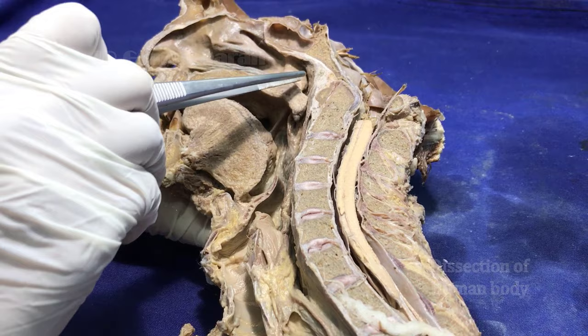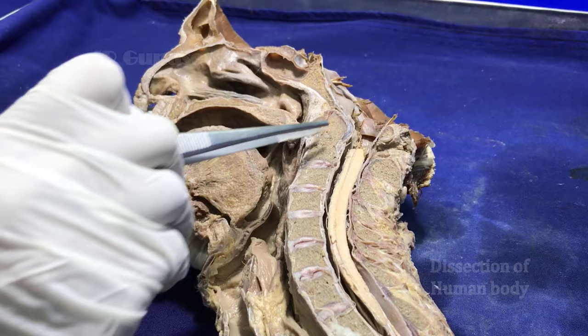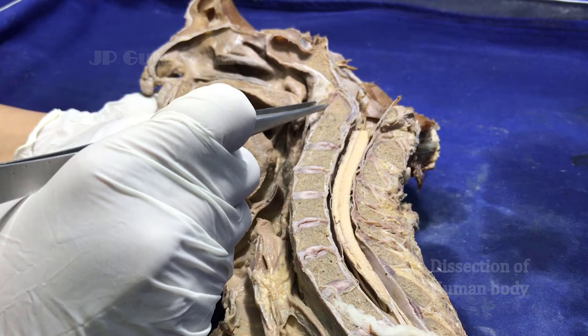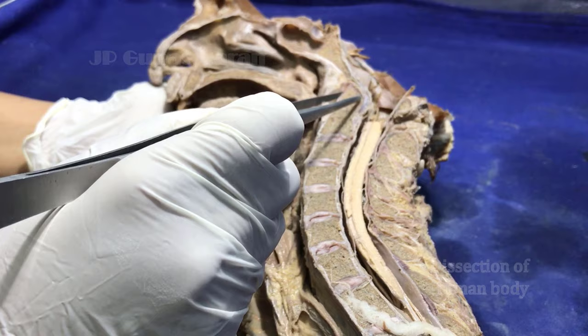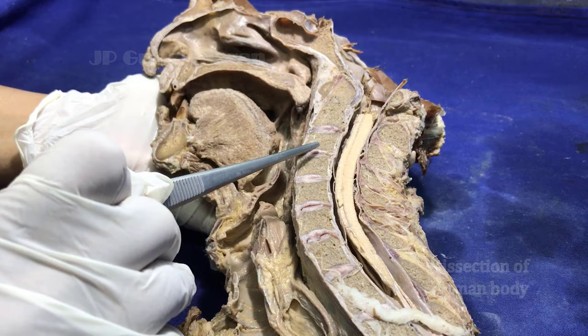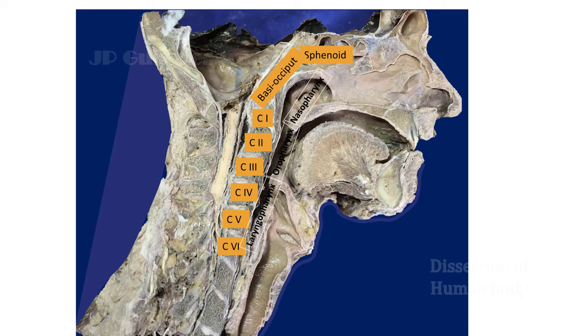The posterior wall of the pharynx is formed by the upper six cervical vertebrae. For the nasopharynx, it is formed principally by the atlas vertebra and a part of the odontoid process of axis. For the oropharynx, it is formed by C2 and C3 vertebra, and for the laryngopharynx, it is formed by C4, C5, and C6 vertebra.